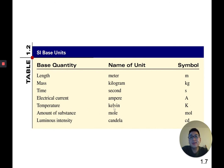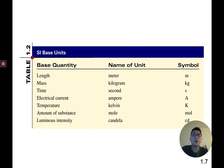Temperature in SI units is measured in Kelvin, which is related to Celsius. In the United States we use Fahrenheit. Amount of substance is measured in moles — you'll use moles a lot in Chapter 3. Luminous intensity, or how bright something is, is measured in candela, though we won't be using that in this class.